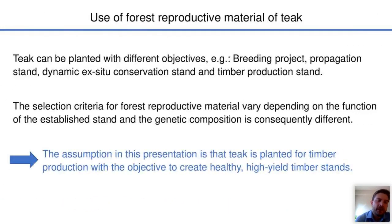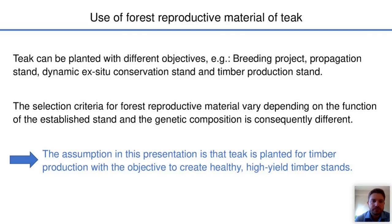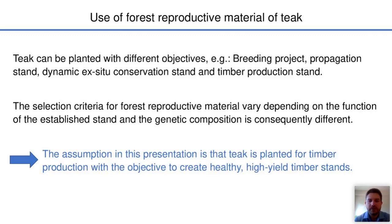Teak can be planted with different objectives: one could initiate a breeding project, establish a propagation stand, an ex situ conservation stand, or most commonly a timber production stand. The selection criteria for forest reproductive material vary depending on the function of the established stand, and the genetic composition is consequently different. The assumption in this presentation is that teak is planted for timber production, with the objective to create healthy, high-yield timber stands.